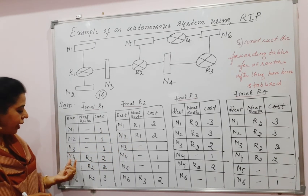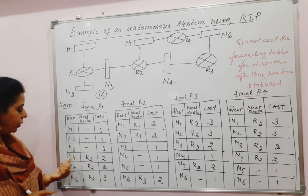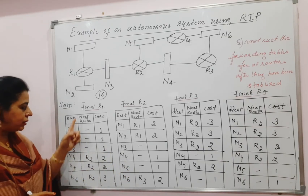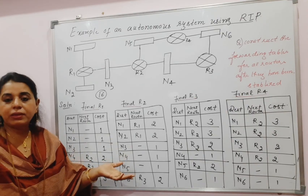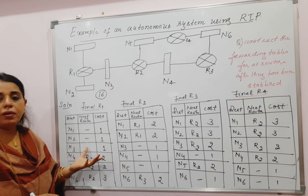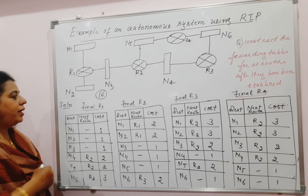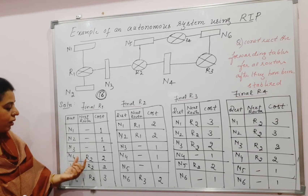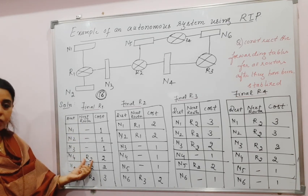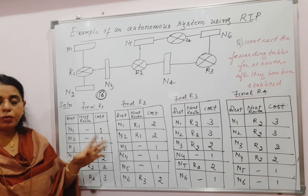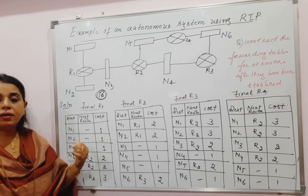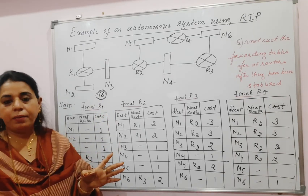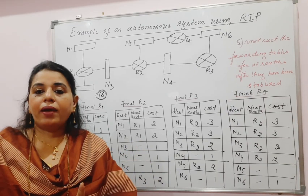In the second situation, the router receives a new route with a cost lower than the existing one. Suppose the existing cost to reach N4 is two, but it receives a new route with cost one — it will replace the old route with the new one, and the next router will also change accordingly. In the third situation, the router receives a new route from the same next router but with a higher cost value — specifically the value 16, which indicates the network is not reachable — and it will replace the old route with this new one.